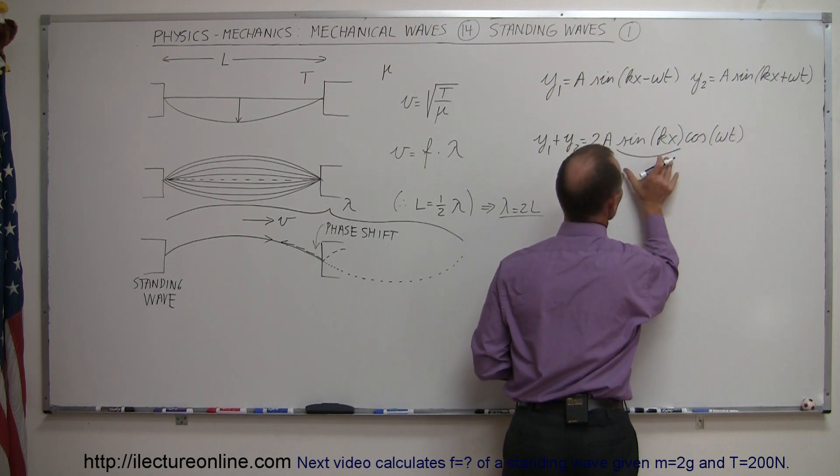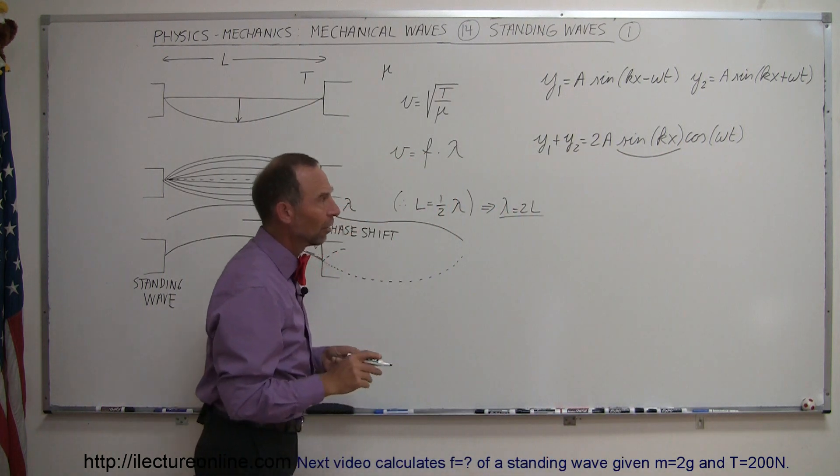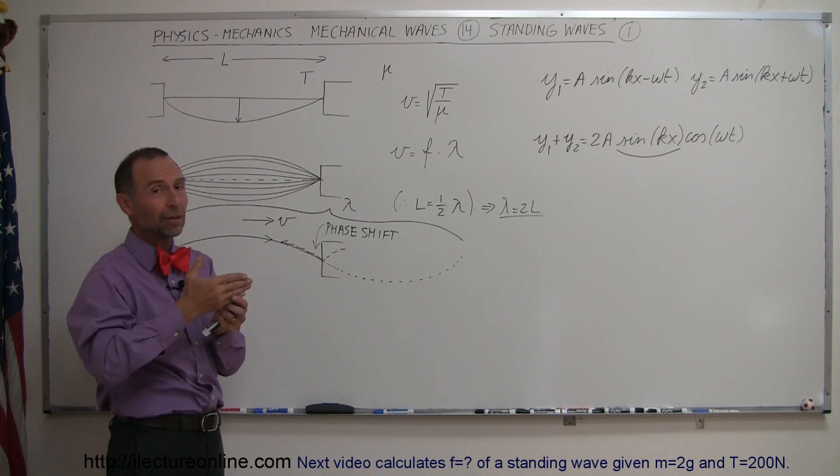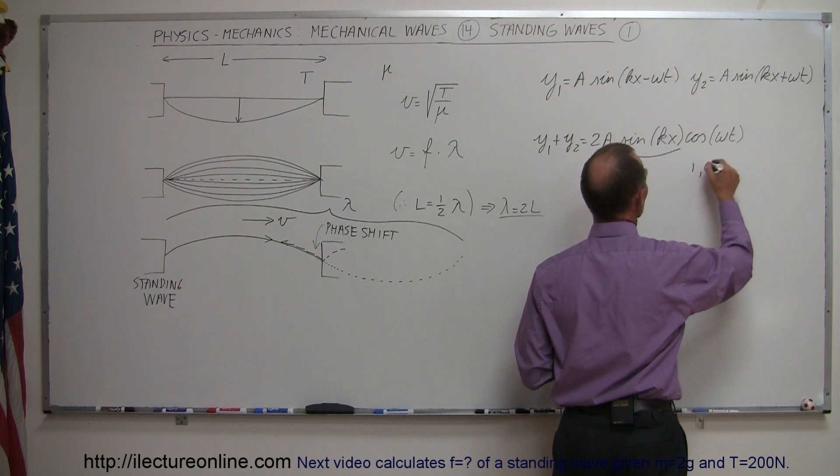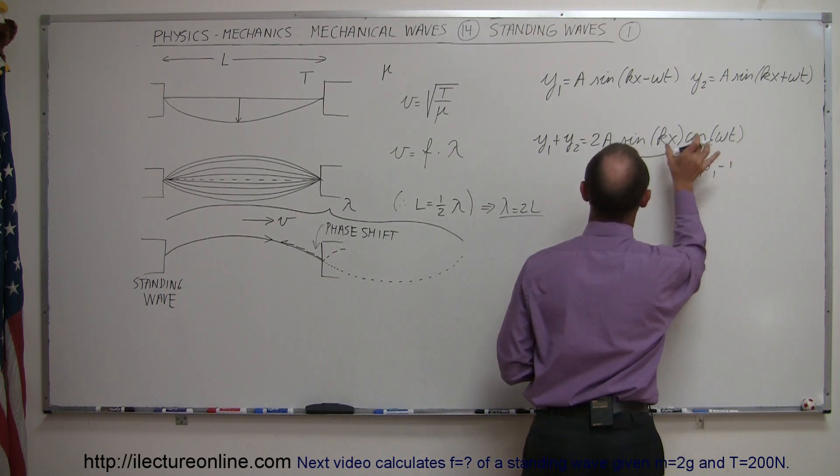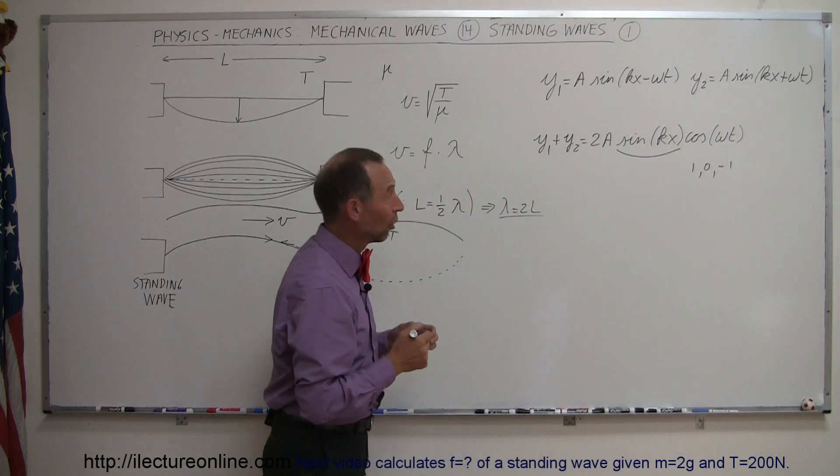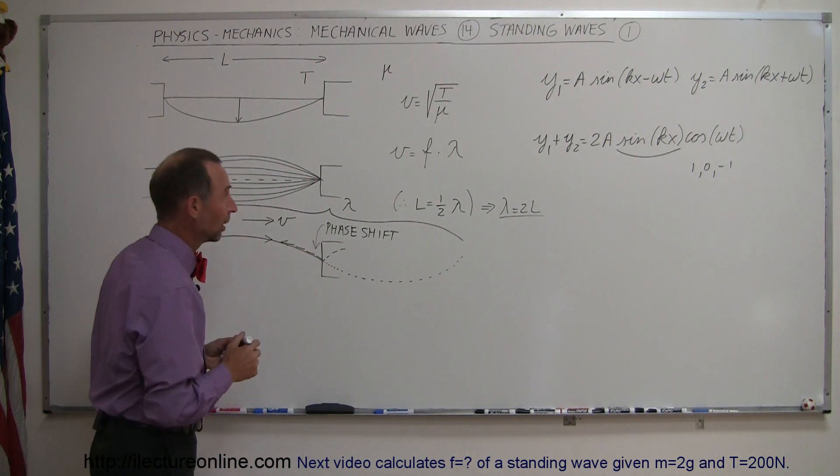Notice again that the sine is only dependent on position, the cosine is only dependent upon time. So if you ignore the cosine for a moment because what the cosine will do is simply bound between values of 1 to 0 and to negative 1 and back and forth. So this is simply a multiplier of the 2a. The sine actually determines what the amplitude can be as a function of position.